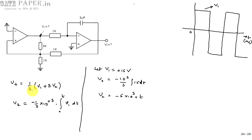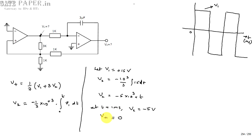At T = 1 millisecond, V+ equals zero, and for T greater than 1 millisecond V+ goes negative. This means V1 changes from plus 15 to minus 15 whenever V+ crosses zero and goes negative. So V1 switches to minus 15 at T = 1ms.